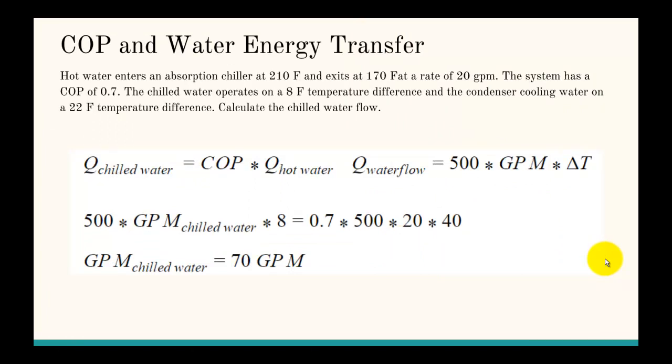This is the last problem. In this case, hot water enters an absorption chiller at 210 degrees Fahrenheit and exits at 170 degrees Fahrenheit at a rate of 20 gallons per minute. The system has a COP of 0.7. The chilled water operates on an 8 degree temperature difference, and the condenser cooling water on a 22 degree temperature difference. Calculate the chilled water flow.